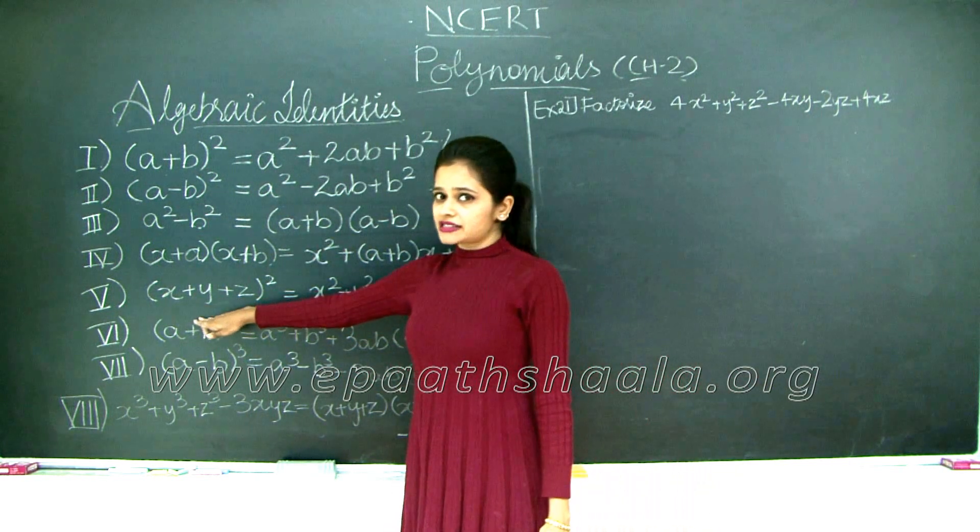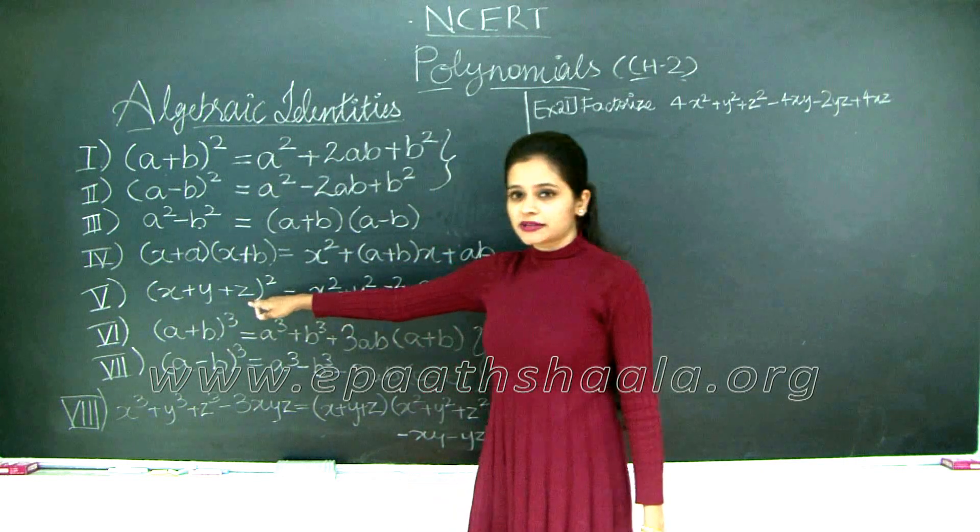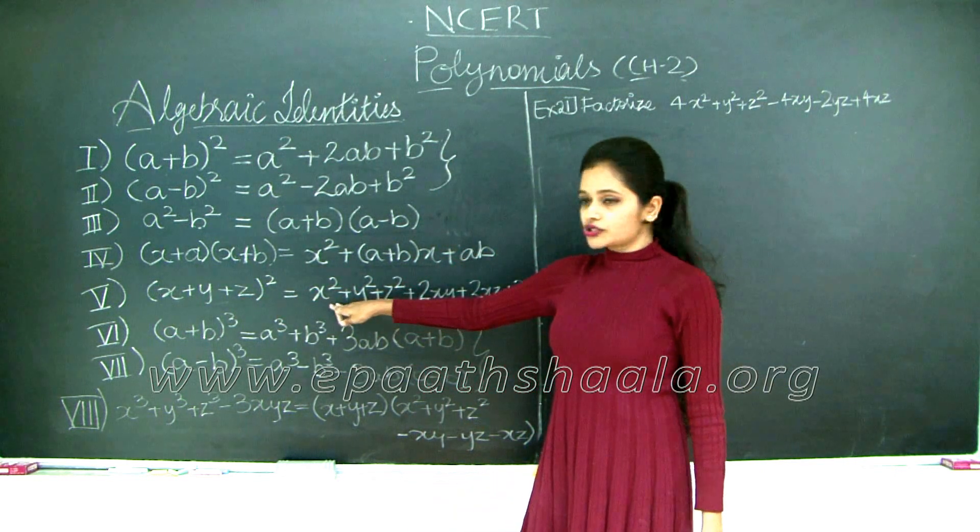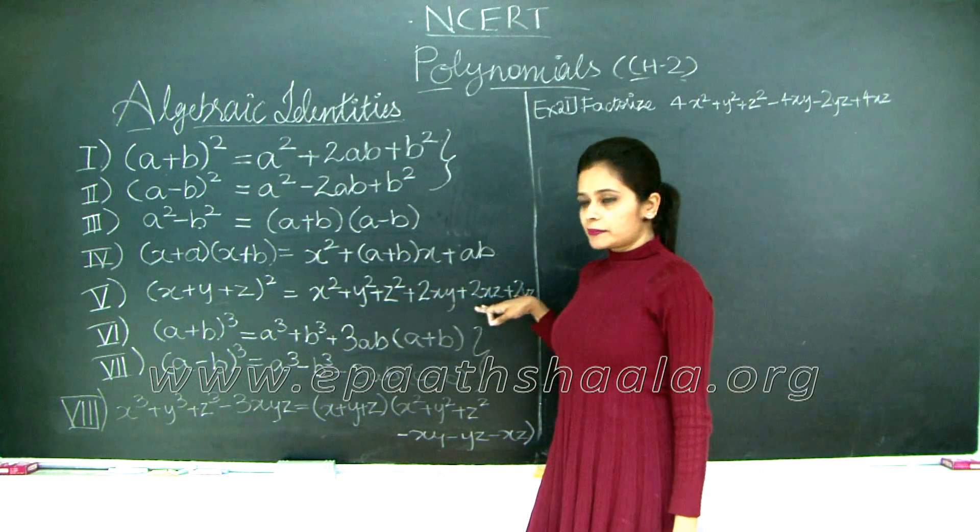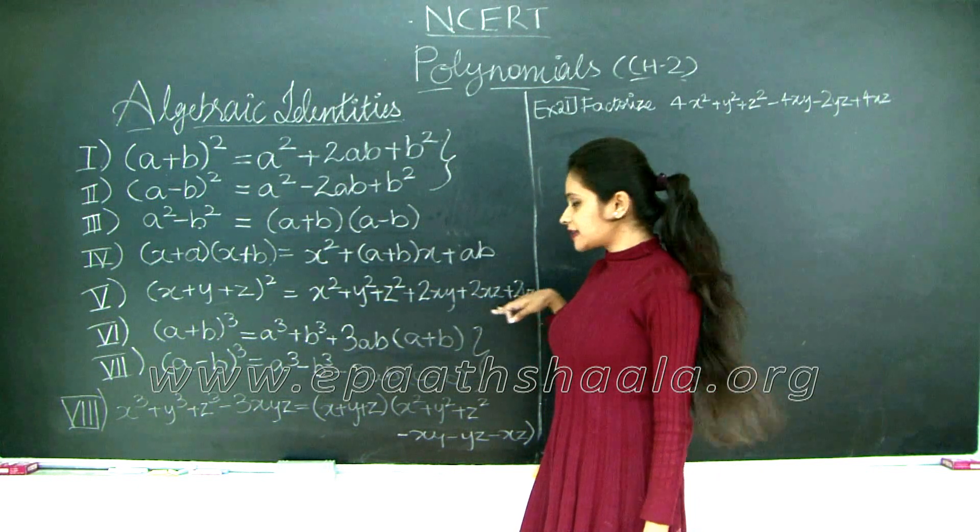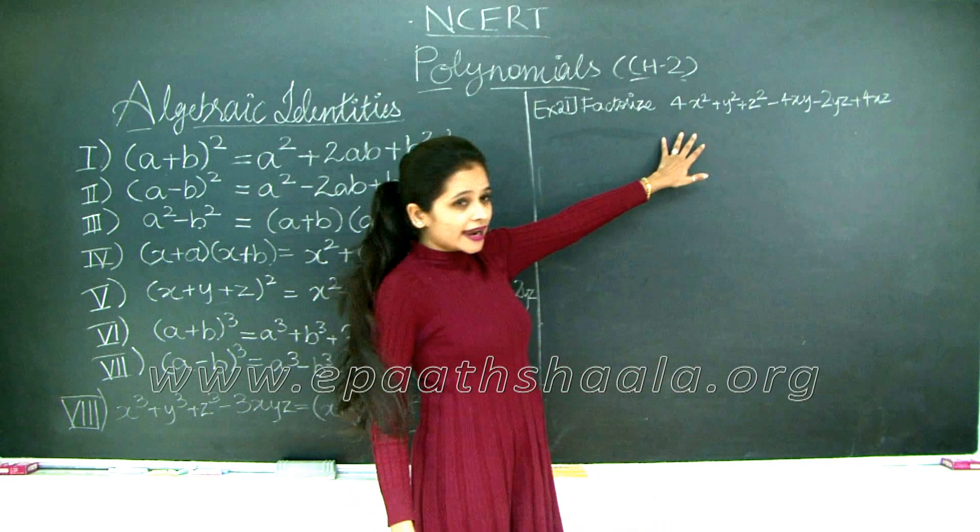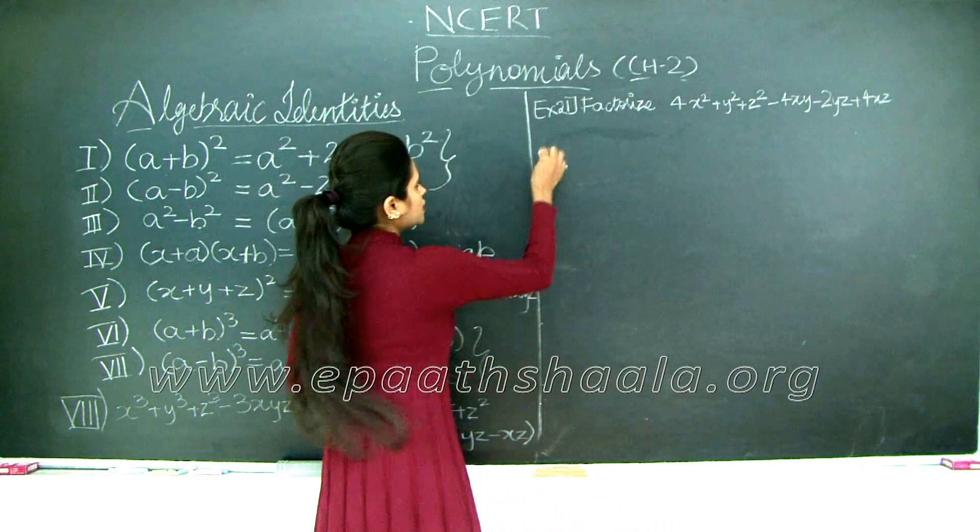Does this resemble any of these? Yes, definitely it resembles the fifth identity. We have (x + y + z) whole square which equals x square plus y square plus z square plus 2xy plus 2yz plus 2xz. So I'm just going to go ahead and rewrite my question.